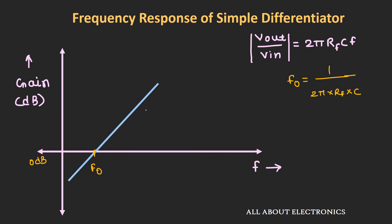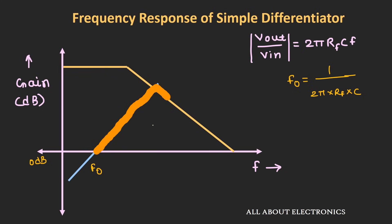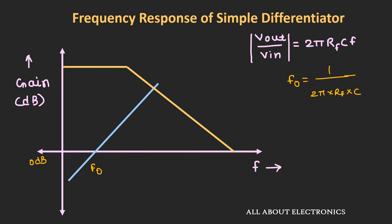The gain of the differentiator cannot increase indefinitely — it is restricted by the open-loop gain response of the op-amp. The maximum gain attainable is at the intersection of the differentiator response and the op-amp's open-loop gain response. At DC (0 Hz), the gain is 0, so we won't face the input offset voltage problem seen in the integrator circuit. But as frequency increases, the gain increases too.